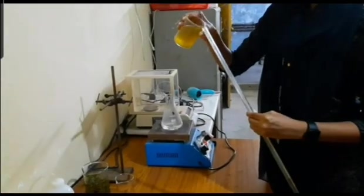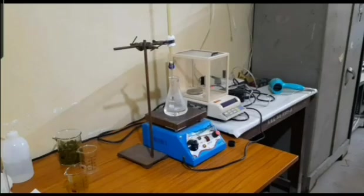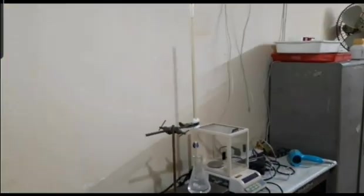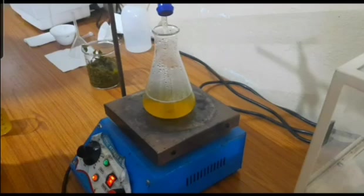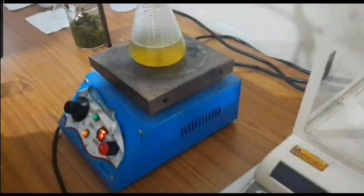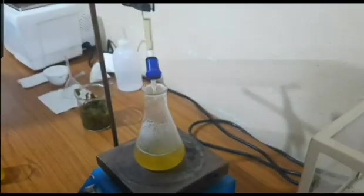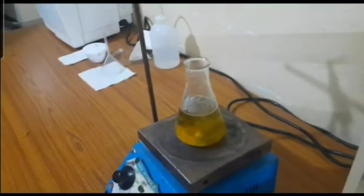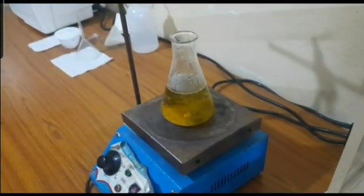Then we have to take the aqueous solution in a burette. We have to titrate drop wise into the zinc nitrate plus distilled water solution. Once we add the aqueous solution of plant drop wise, we will get the final product.